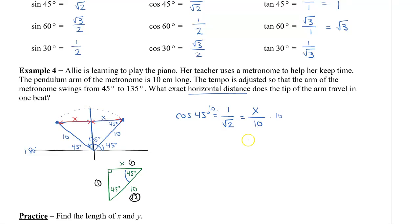Now that we have this, I can solve for x by multiplying both sides by 10. That will isolate my x. Here we have x is equal to 10 divided by root 2. And I can simplify this by multiplying root 2 on the top and bottom. We're going to rationalize the denominator. So, I have 10 root 2, root 2 times root 2 is root 4, which is 2. So, x equals 5 root 2.